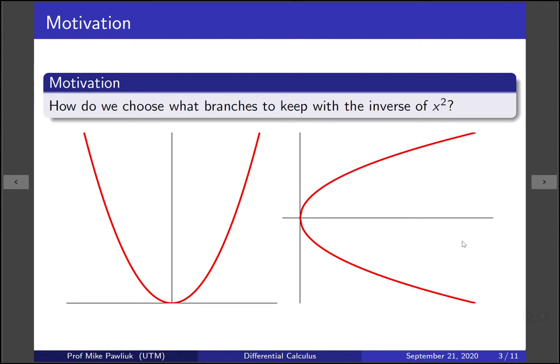Now this isn't a function because it fails the vertical line test, so we have to choose whether we're going to keep the top branch or the bottom branch.